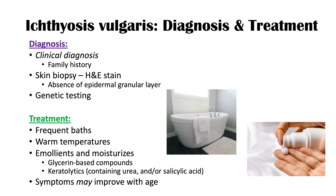In review, ichthyosis vulgaris is a clinical diagnosis. A skin biopsy with H&E stain will show a reduction or absence of the stratum granulosum. Treatment includes frequent baths, emollients and moisturizers that are typically glycerin-based, and/or keratolytics containing urea and/or salicylic acid. That was the lesson on ichthyosis vulgaris — please consider liking, subscribing, and clicking the notification bell. Thank you for watching.